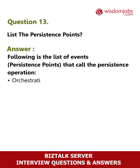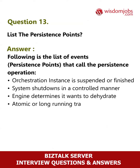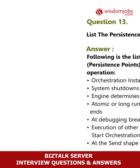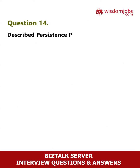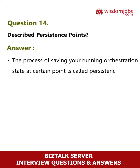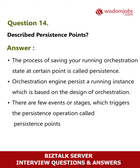Question 13: List the persistence points. Answer: The following events trigger persistence: orchestration instance is suspended or finished; system shuts down in a controlled manner; engine determines it wants to dehydrate; atomic or long-running transactional scope ends; at debugging breakpoints; execution of other orchestrations through the start orchestration shape; and at the send shape but not atomic. Question 14: Describe persistence points. Answer: The process of saving a running orchestration state at a certain point is called persistence. The orchestration engine persists a running instance based on the design of the orchestration. There are few events or stages which trigger the persistence operation, called persistence points.